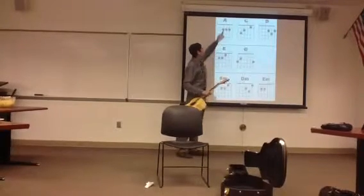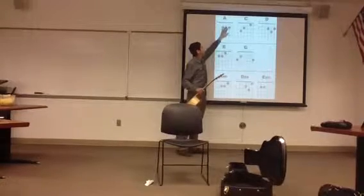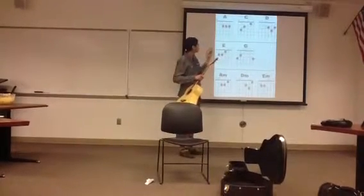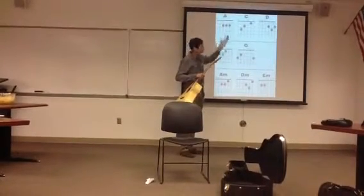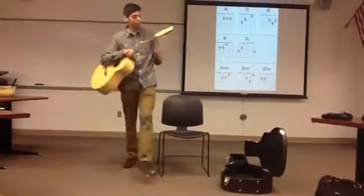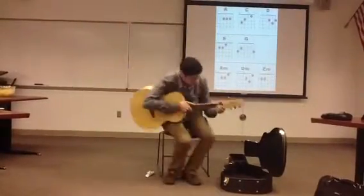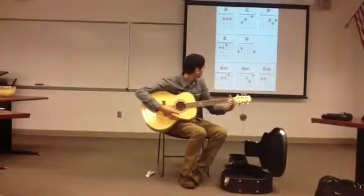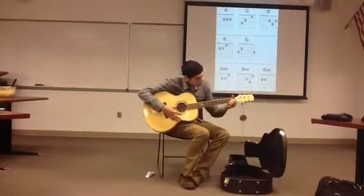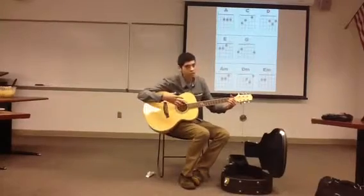The number one stands for your index finger, two is for your middle finger, and three is for your ring finger. You want to basically try to mimic what it shows on the chord chart and place your fingers on the frets. For the A chord, it's basically a straight line down — that's an A chord.